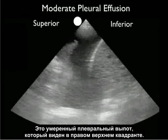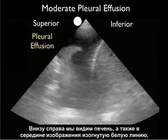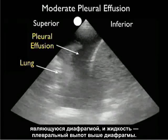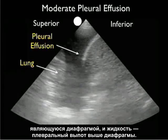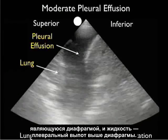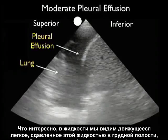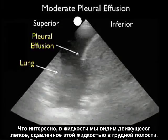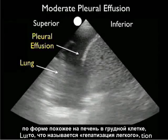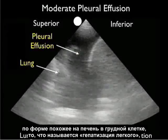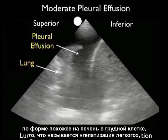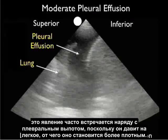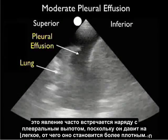Here's a moderate pleural effusion as taken from the right upper quadrant view. We see the liver to the inferior aspect, the curving white line of the diaphragm in the middle of the image, and fluid representing a pleural effusion superior to the diaphragm. Interestingly enough, we see the lung moving around compressed by the fluid within the chest cavity, taking on what appears like a liver within the chest — something called hepatization of the lung — commonly seen with pleural effusion as it pushes in on the lung making it more of a solid type organ.